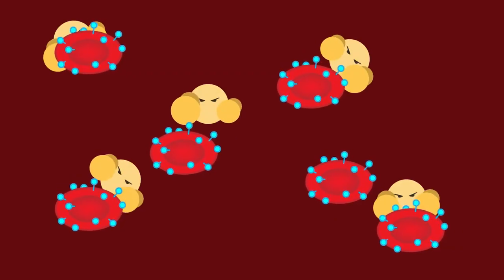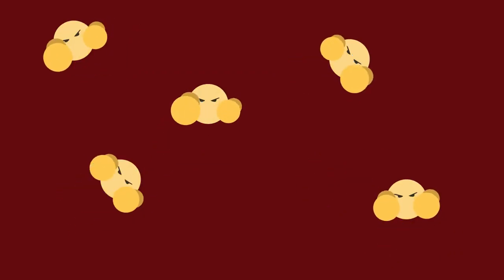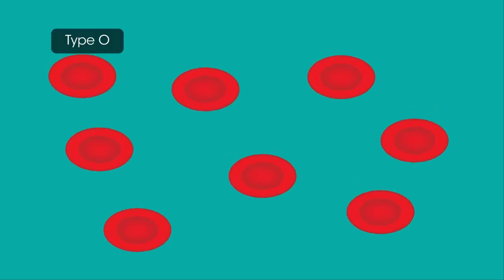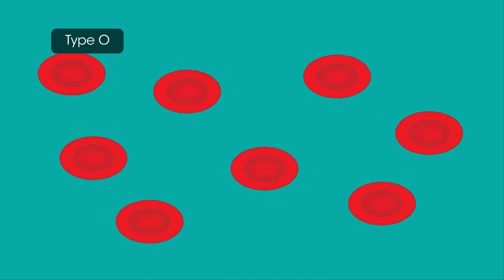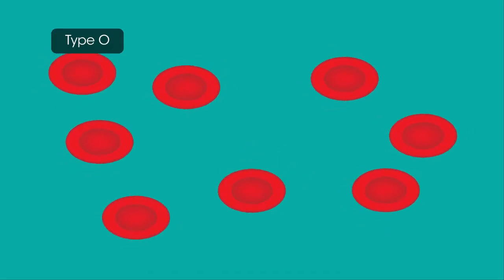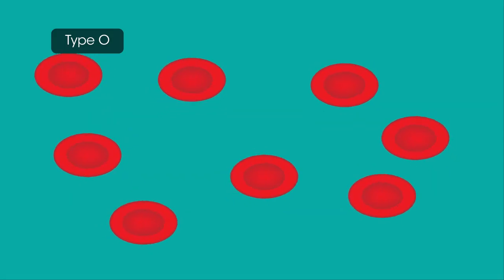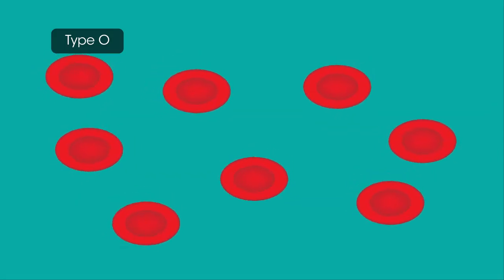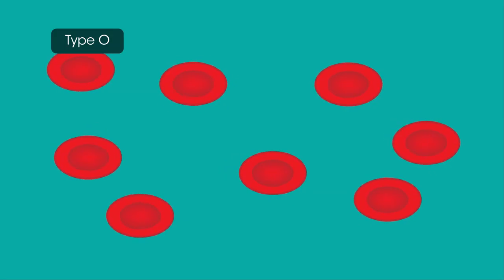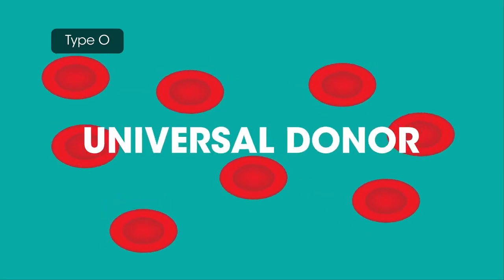Antigens trigger an immune response in which your body tries to get rid of them, as it thinks they're foreign and bad. Because blood type O doesn't have any antigens on its surface, when type O is donated to people from other blood groups, the recipient's body doesn't recognize them as foreign and so doesn't try to fight them off — which is why no-antigen O is the universal donor.